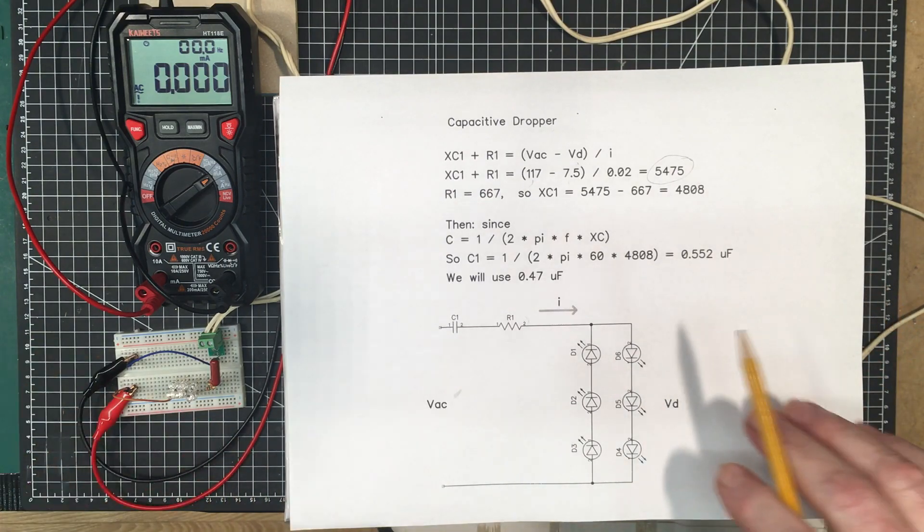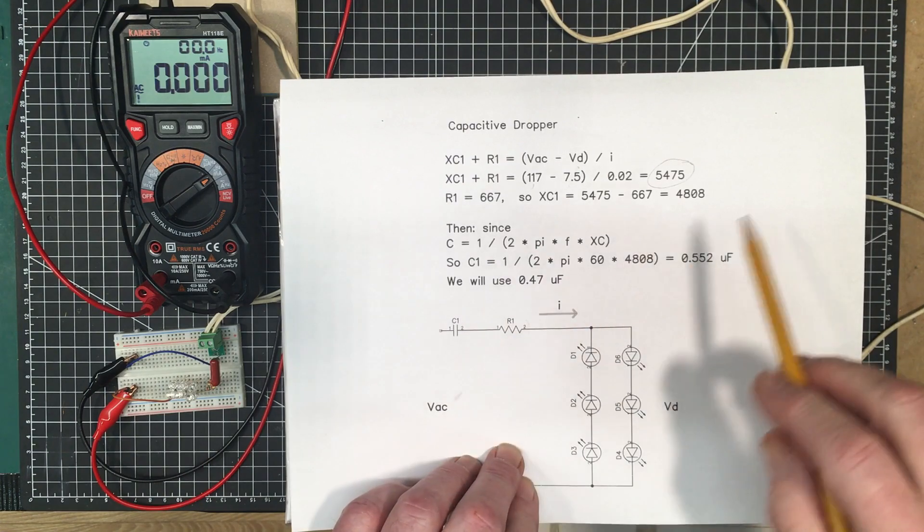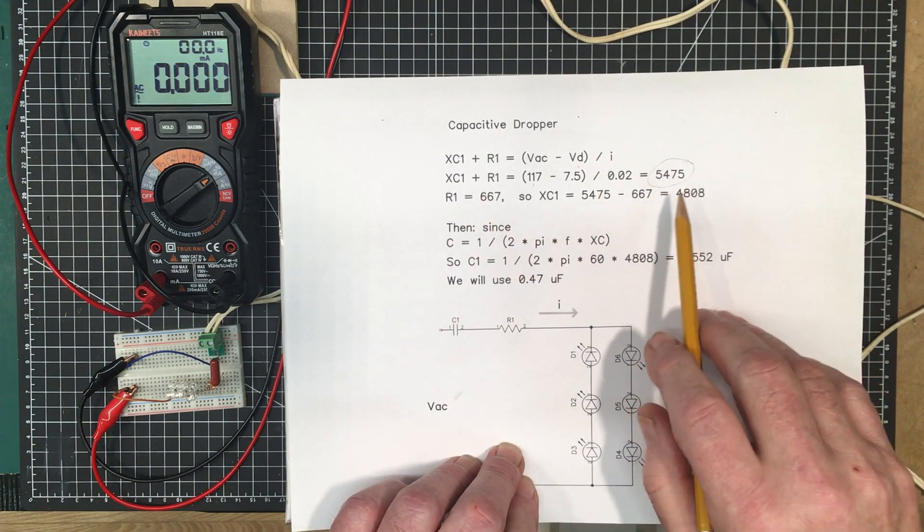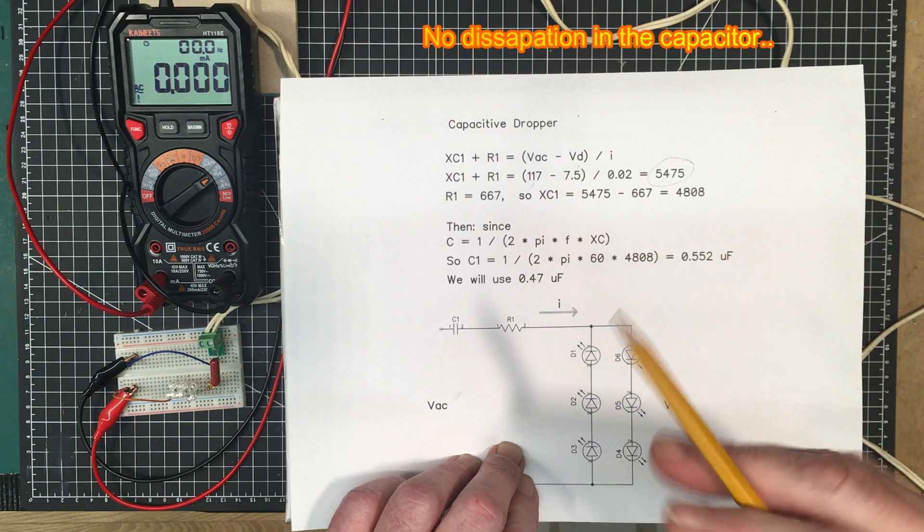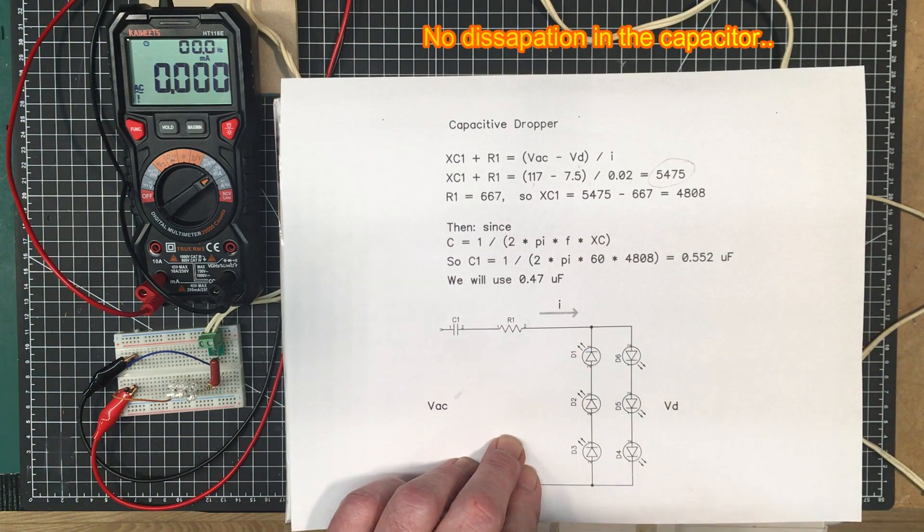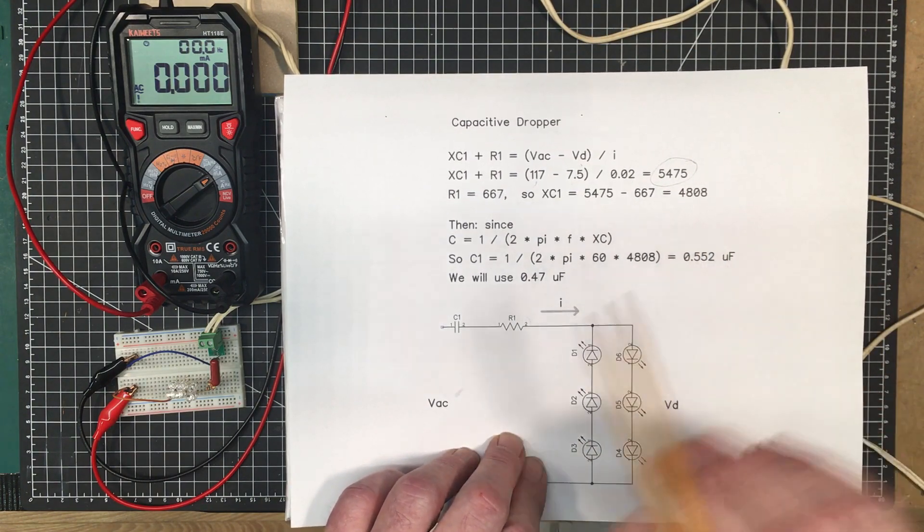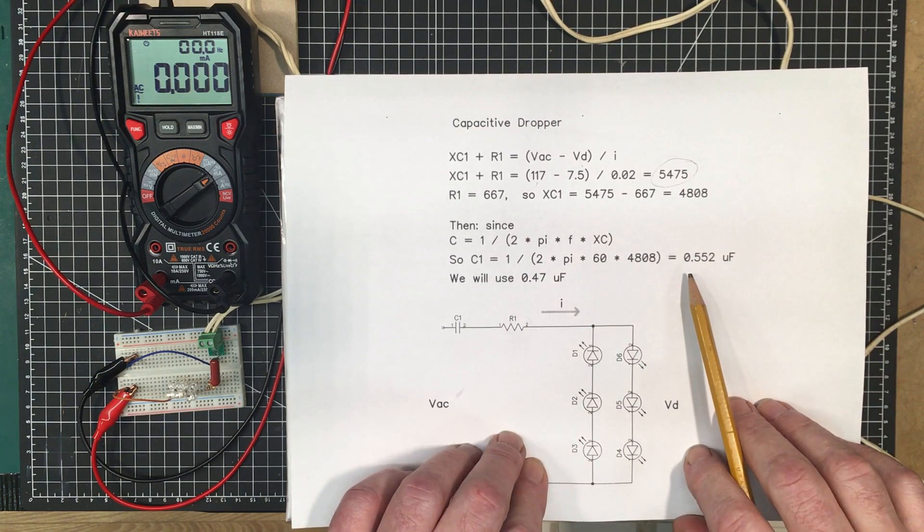Another nice thing about these is that all the voltage drop is across the reactance, so there's no power dissipation. The only power dissipation would be in the equivalent series resistance or equivalent parallel resistance inside the capacitor, which is very very small. So very little power dissipation in these things as well.